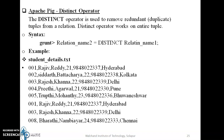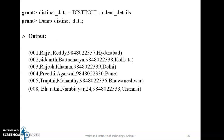Now moving to the distinct operator. This is used to remove redundant, that is duplicate, tuples from a relation. Distinct operator works on the entire tuple. Consider student_details.txt which contains duplicate tuples for records 001 and 003. Using the distinct operator: distinct_data = DISTINCT student_details. Dumping distinct_data shows only six distinct tuples.